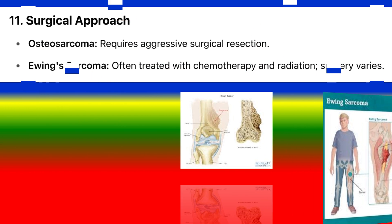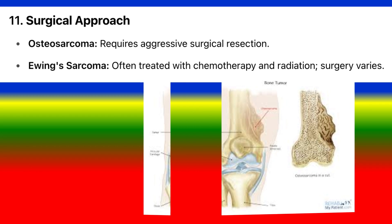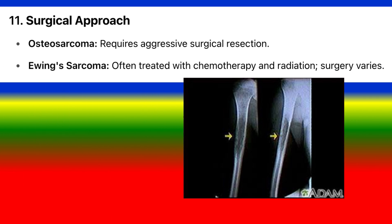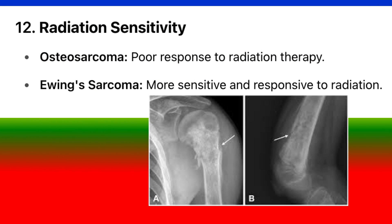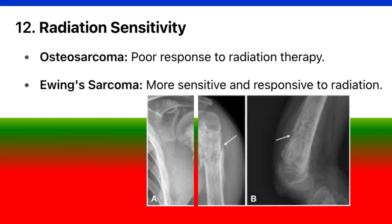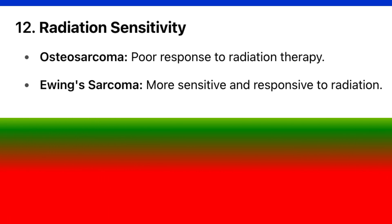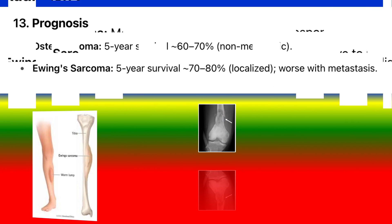11. Surgical approach. Osteosarcoma: requires aggressive surgical resection. Ewing's sarcoma: often treated with chemotherapy and radiation; surgery varies. 12. Radiation sensitivity. Osteosarcoma: poor response to radiation therapy. Ewing's sarcoma: more sensitive and responsive to radiation.